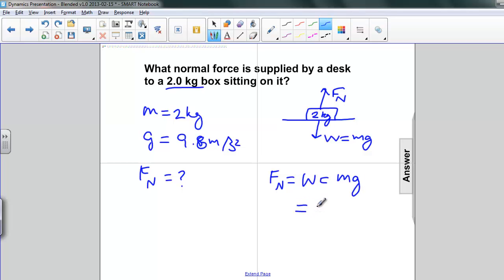Substituting the values in, 2 kilograms times 9.8 meters per second squared, and that is equal to 19.6 newtons.